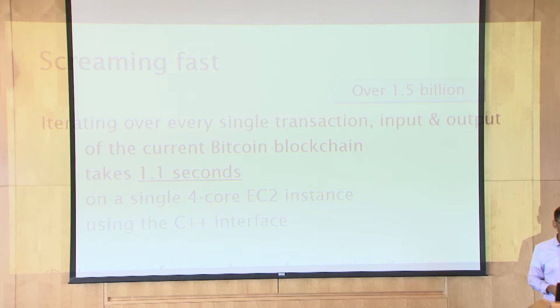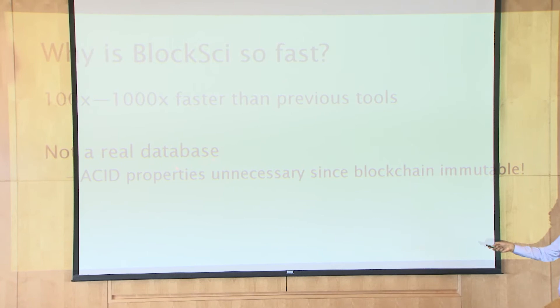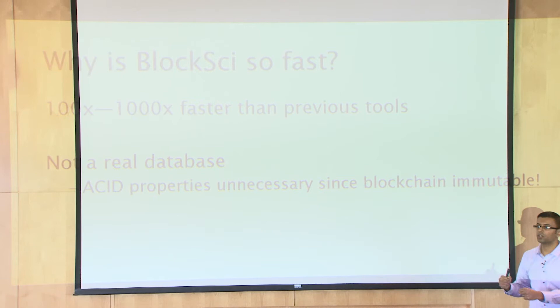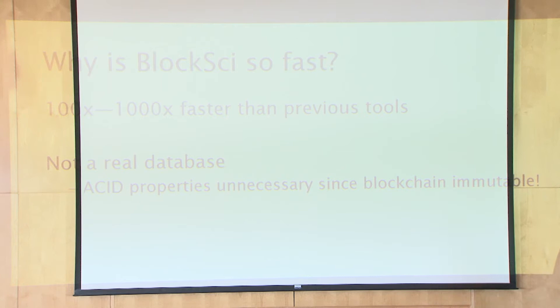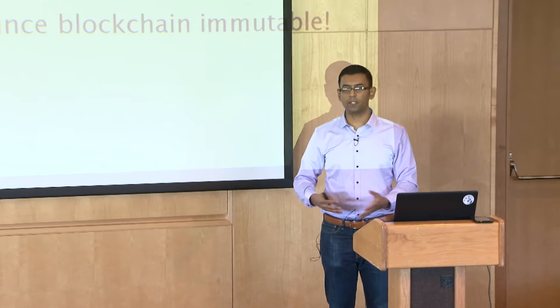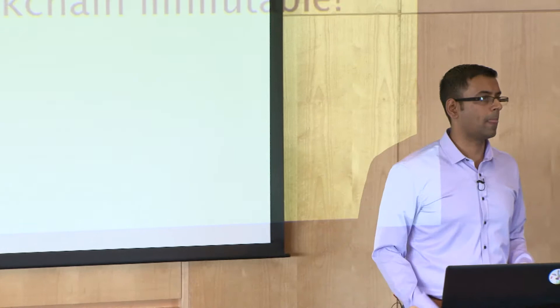The reason we're hundreds of thousands of times faster than previous tools is that we give up on all the ACID properties of traditional databases — handling concurrent readers and writers, preventing data corruption. We don't need that. Why? Because that's the beautiful thing about blockchains: it's an immutable database. Once data is written and you're comfortable that a certain number of blocks have confirmed the transaction, you know it's never going to change. So we don't need those traditional database properties.